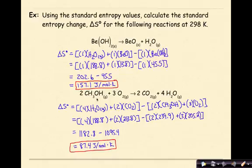Two moles of CH3OH plus three moles of oxygen yields two moles of CO2 and four moles of water. My change in entropy are my products minus my reactants. I substitute in my values for each.